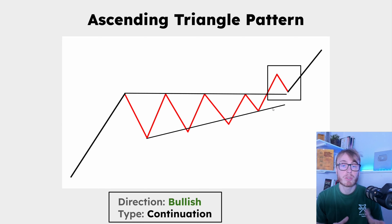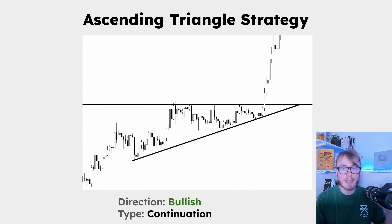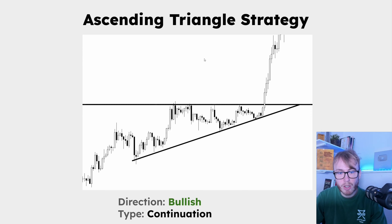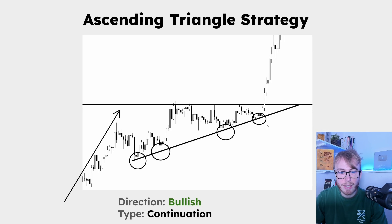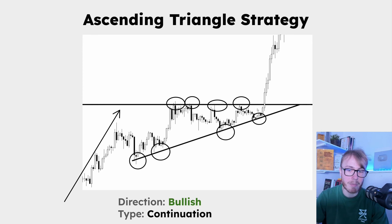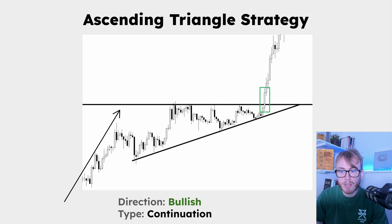The first pullback after the break of resistance is also an important point, and I will talk about that very soon. Now let's take a look at the ascending triangle strategy. Here we have a great real-life example of an ascending triangle. You can see that before the triangle appears we have an uptrend, then we saw the price clearly printing consecutive higher lows, and we also saw highs coming in at pretty much the exact same level.